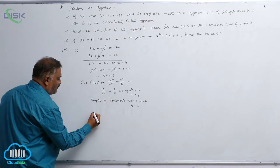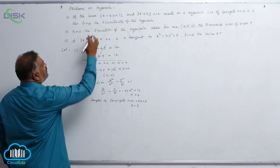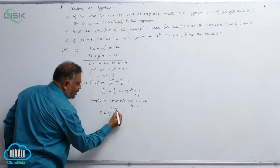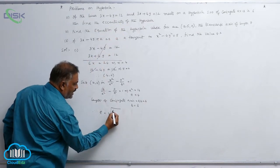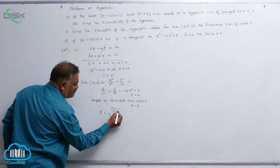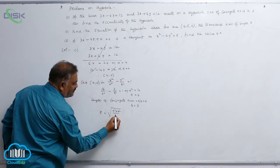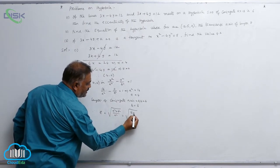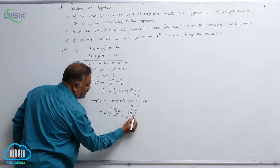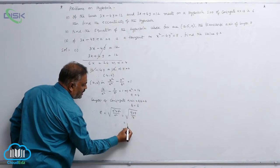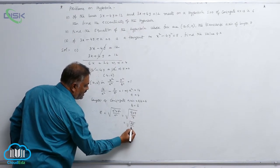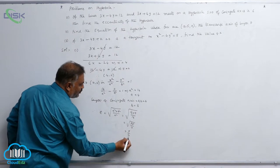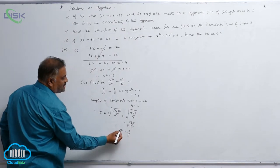Now we know the values of a and b. Eccentricity e equals the square root of (a² plus b²) divided by a², which is the square root of (16 plus 9) divided by 16, equal to the square root of 25 by 16, giving e equal to 5 by 4.